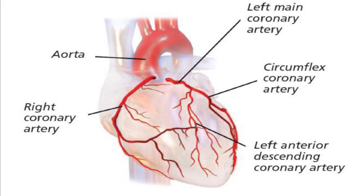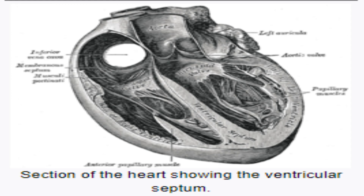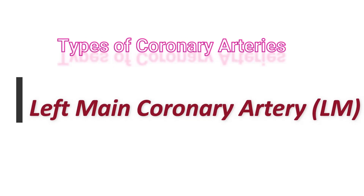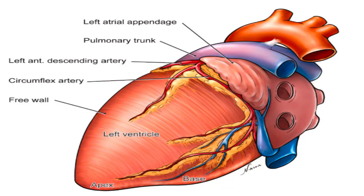Branches of the RCA also deliver blood to one third of your interventricular septum, which is the wall between your heart's two lower chambers. Left main coronary artery: the left main coronary artery supplies blood to your left atrium and left ventricle.